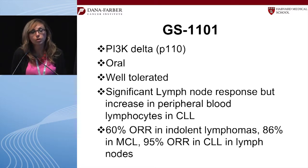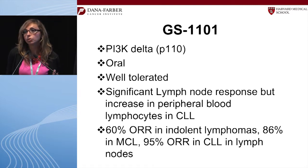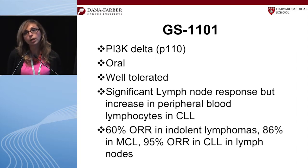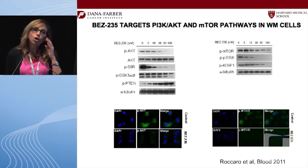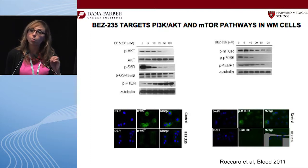Other PI3K and mTOR inhibitors are being explored. The TORC1/TORC2 inhibitor MLN-128 from Millennium was tested in a few heme malignancy patients and showed responses. GS-1101 (formerly CAL-101, idelalisib), a specific PI3K-delta inhibitor, has shown responses in hematological malignancies including Waldenström patients. Dual PI3K/mTOR inhibitors such as BEZ235 and others are also in development for clinical trials in Waldenström.